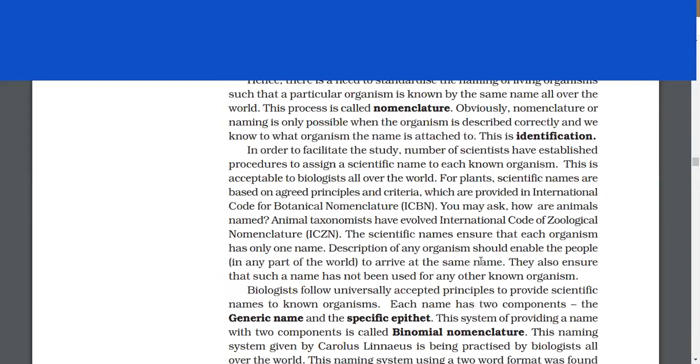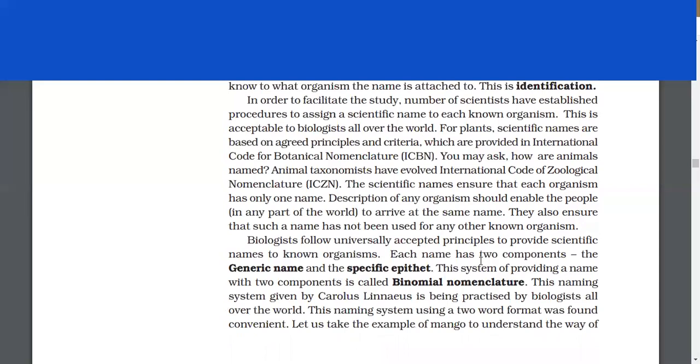In order to facilitate the study, scientists have established procedures to assign a scientific name to each known organism. This is acceptable to biologists all over the world. For plants, scientific names are based on agreed principles provided in International Code for Botanical Nomenclature (ICBN). Animal taxonomists have evolved International Code of Zoological Nomenclature (ICZN).